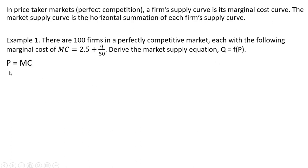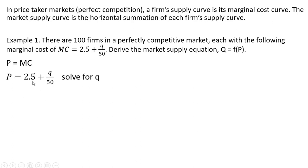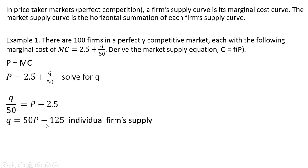The first thing we recognize is that in perfect competition, price equals marginal cost — this is how firms maximize profit. So we're going to replace MC with P, and solving this equation for Q, moving some things around and multiplying through by 50, we get the individual firm's supply.